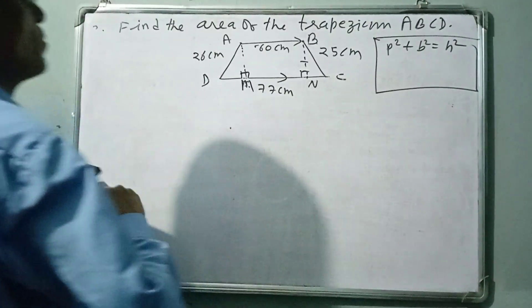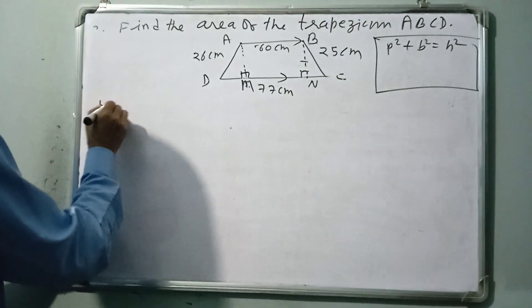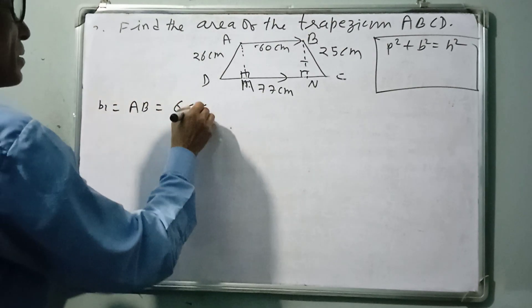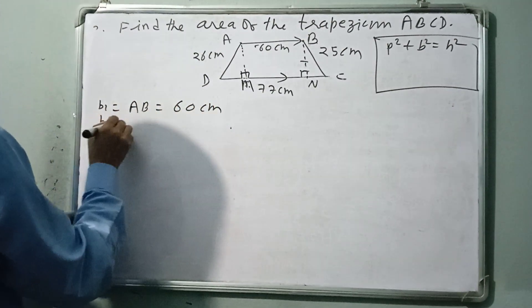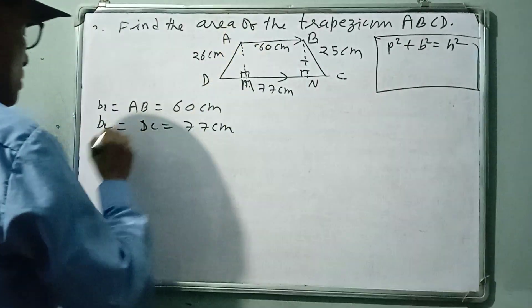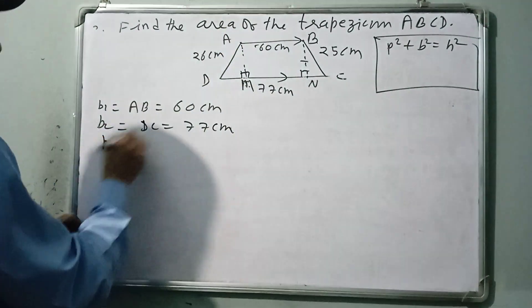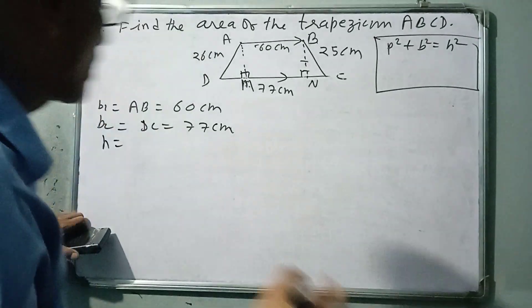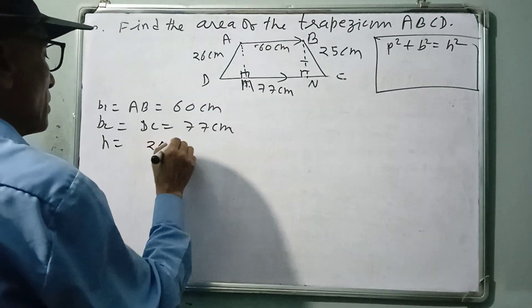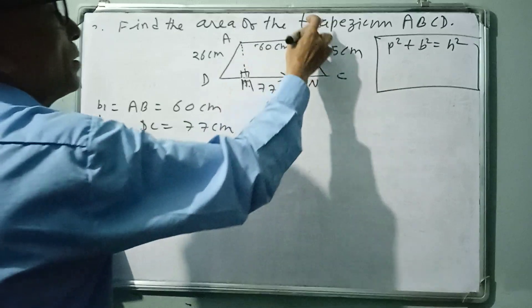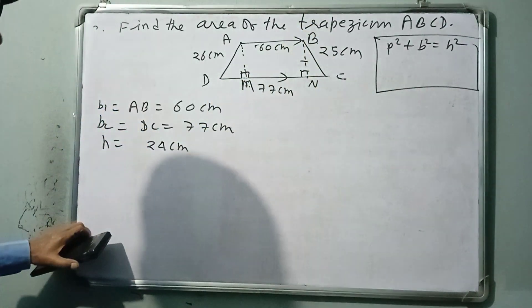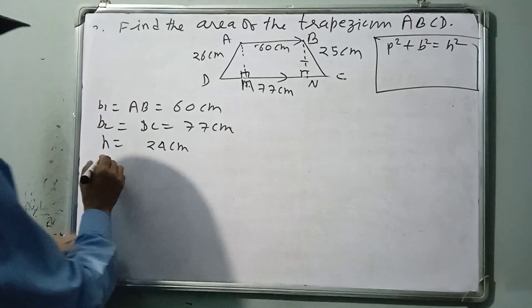Now we have all values: base 1 AB = 60 cm, base 2 DC = 77 cm, and height (perpendicular distance between the two parallel lines) = BN = 24 cm.